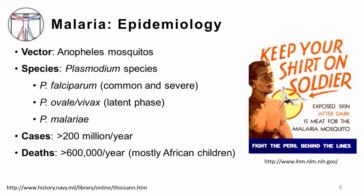There are four plasmodium species that are core for you to learn about in terms of causes of malaria infection, and then there's one additional that I'll mention. Plasmodium falciparum is by far the most common and the one associated with the most severe disease. Plasmodium ovale and vivax are also common, and their unique characteristic is they're the ones that can cause a latent infection in the liver. Plasmodium malariae does not have that latent phase and tends to be less severe. There's also the newer species called plasmodium knowlesi, which was originally thought just to cause infection in monkeys, but has now recently been recognized to cause infection in humans as well.